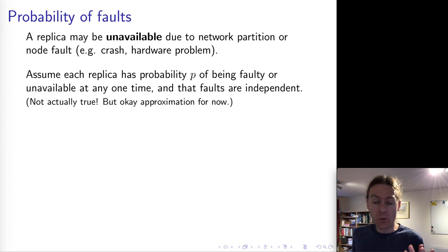Let's assume there's some probability p that a node is unavailable at any given time. And let's also assume that whether one node is unavailable is independent from whether another node is unavailable. So we're going to assume that faults are not correlated.